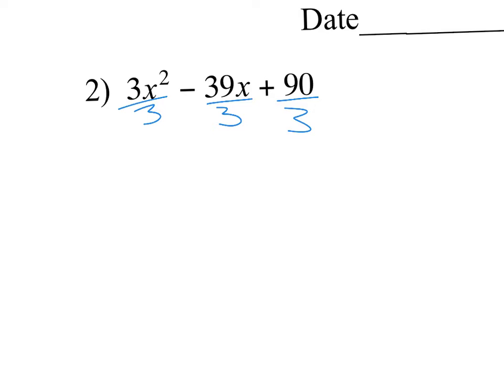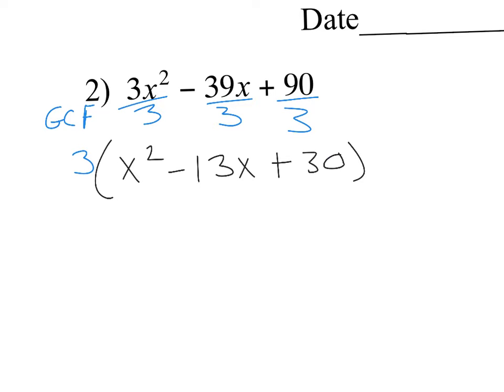Is there a GCF? Yes — it's three. There are x's in the first two terms, but you have to be able to factor it out of all three. So what's going to be left in the remainder expression after you factor out that GCF? It'll be x squared, then negative 13x plus 30.